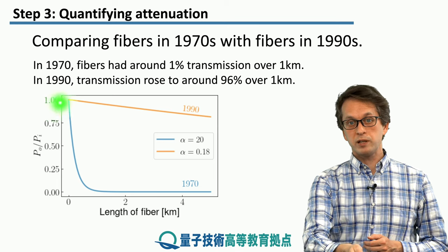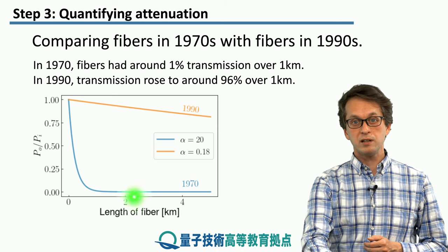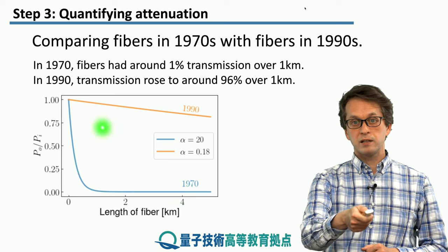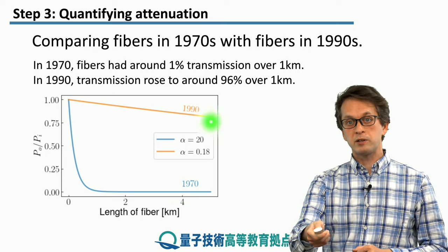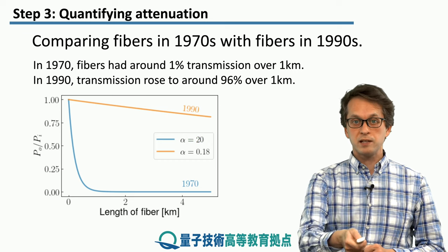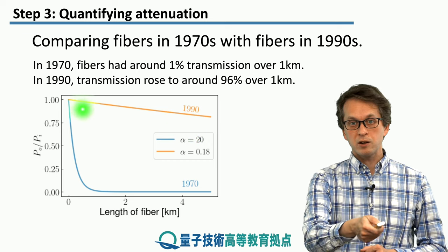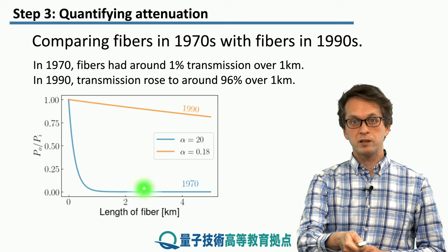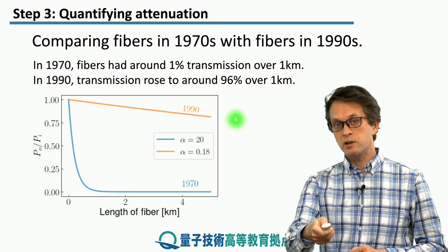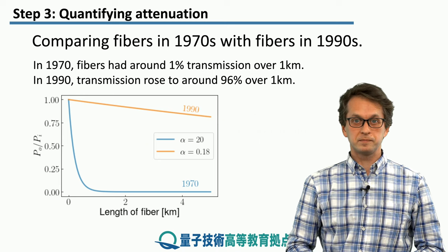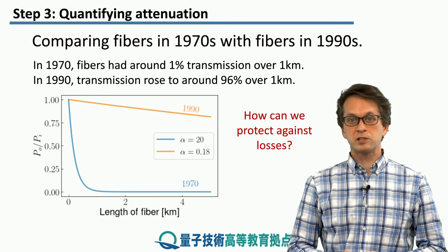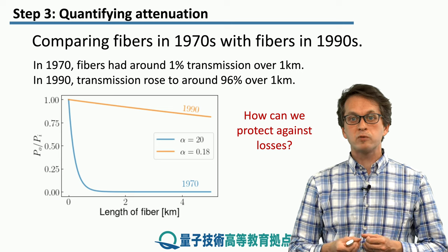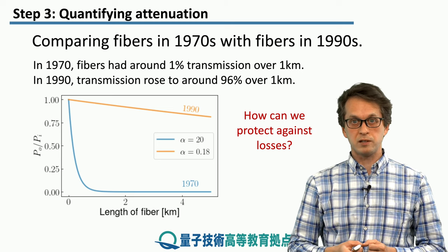The blue line corresponds to the attenuation levels achieved in the 1970s, with alpha equal to 20 decibels per kilometer. The orange line shows the attenuation parameter from the 1990s, with alpha equal to 0.18 decibels per kilometer. We can see how quickly the ratio approaches 0 for the large attenuation parameter, whereas for the very low attenuation parameter it decreases much more slowly. The question now is: knowing the main sources of loss and how to quantify them, how can we protect against and counteract these losses in our fiber?